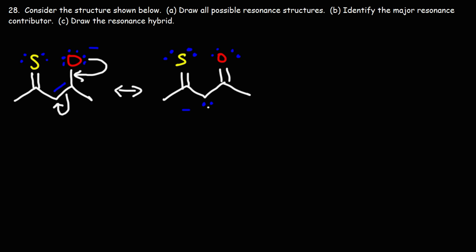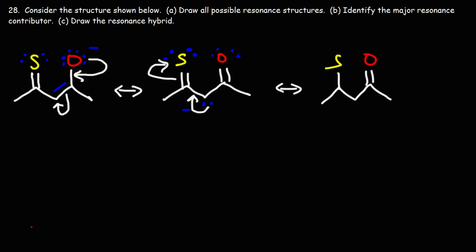Now we can take this lone pair, form a pi bond, break this pi bond, and put those electrons on a sulfur atom. So now the sulfur is going to have three lone pairs and it's going to carry the negative charge.